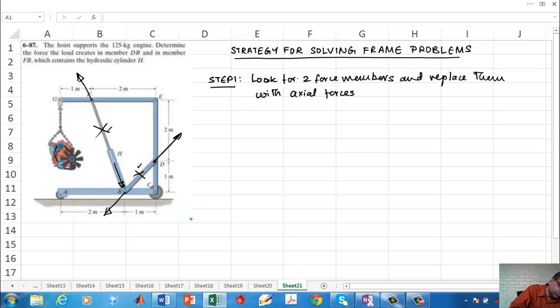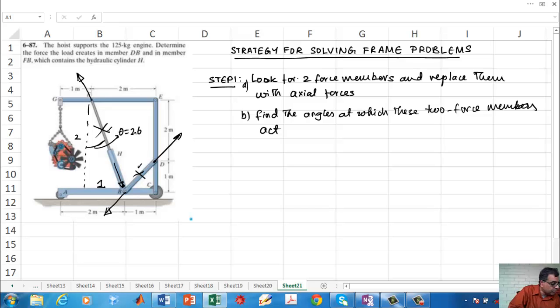Step two: find the angles at which these two-force members act. If you look at this, if I draw a line here, you can see that this distance is one, this distance is two. So you can calculate this angle, theta equals 26 degrees, 26.56 something like that. And this angle is 45 degrees. Now we are ready to calculate all the relevant data.